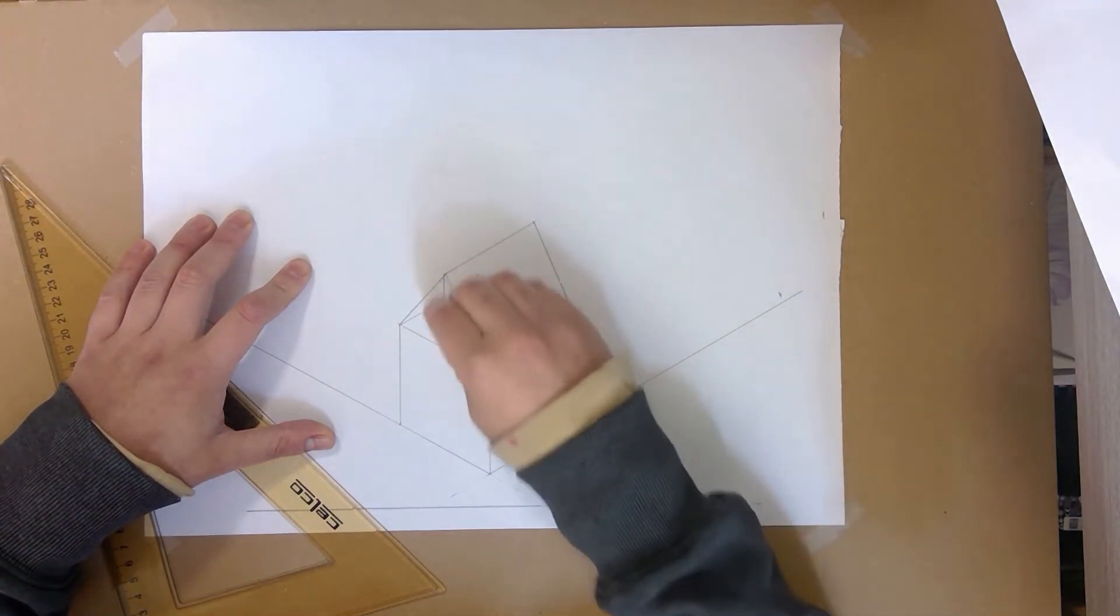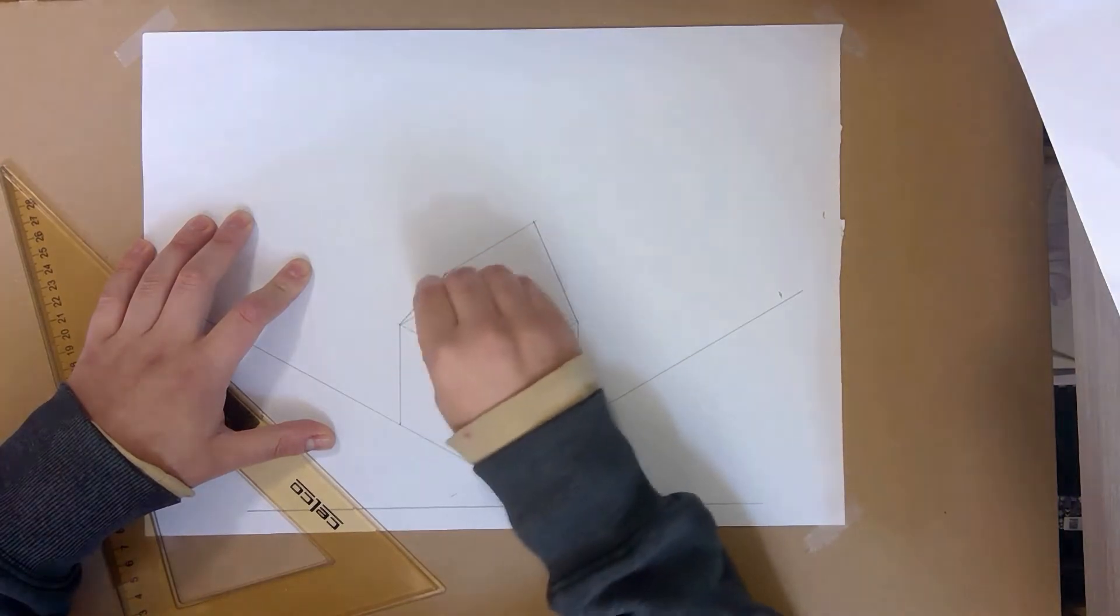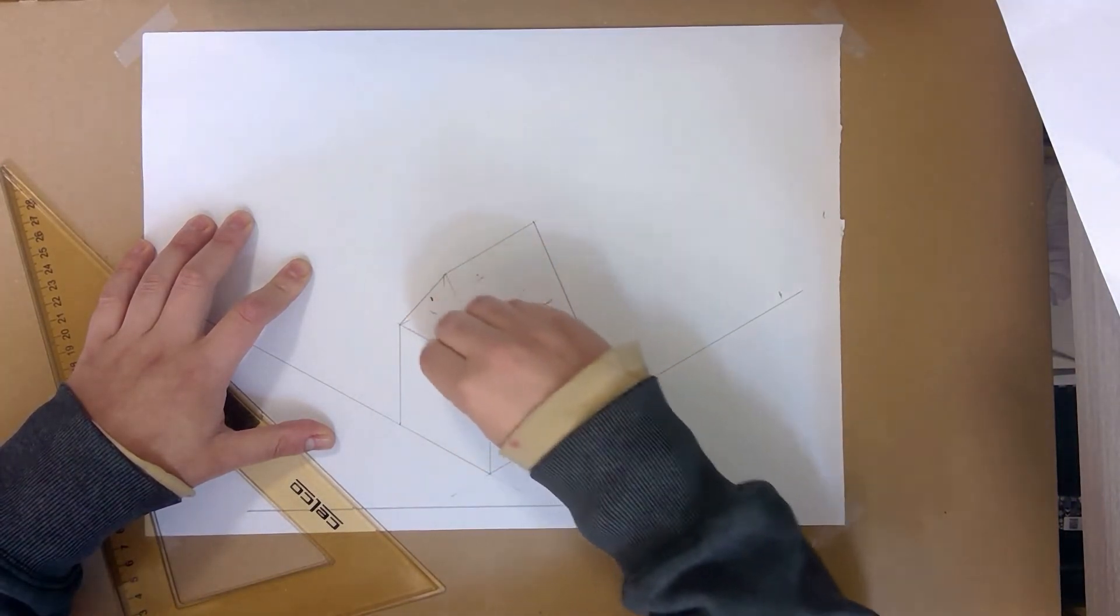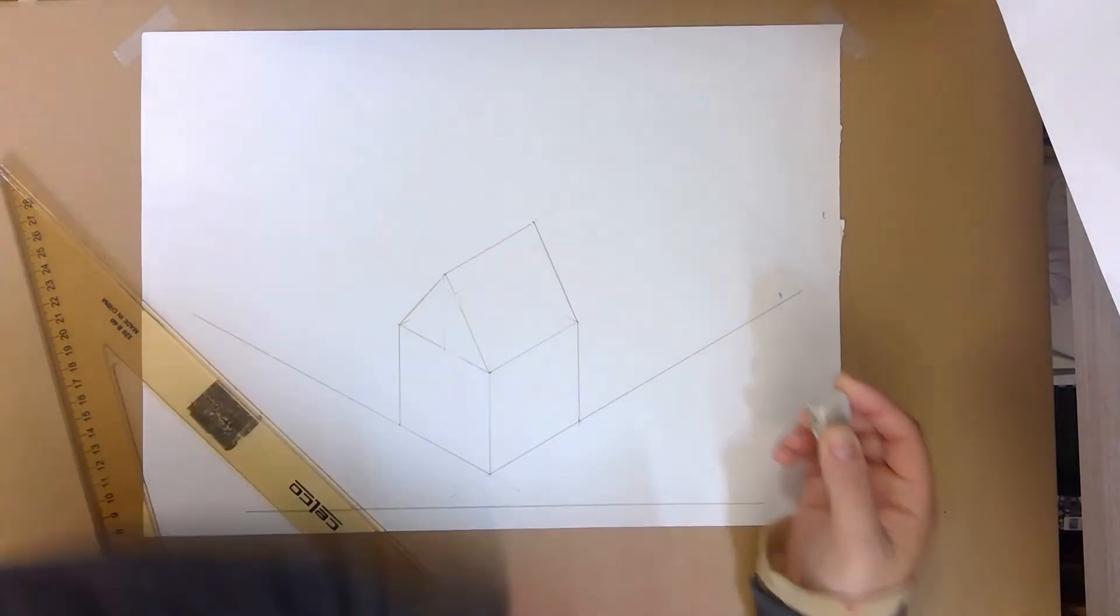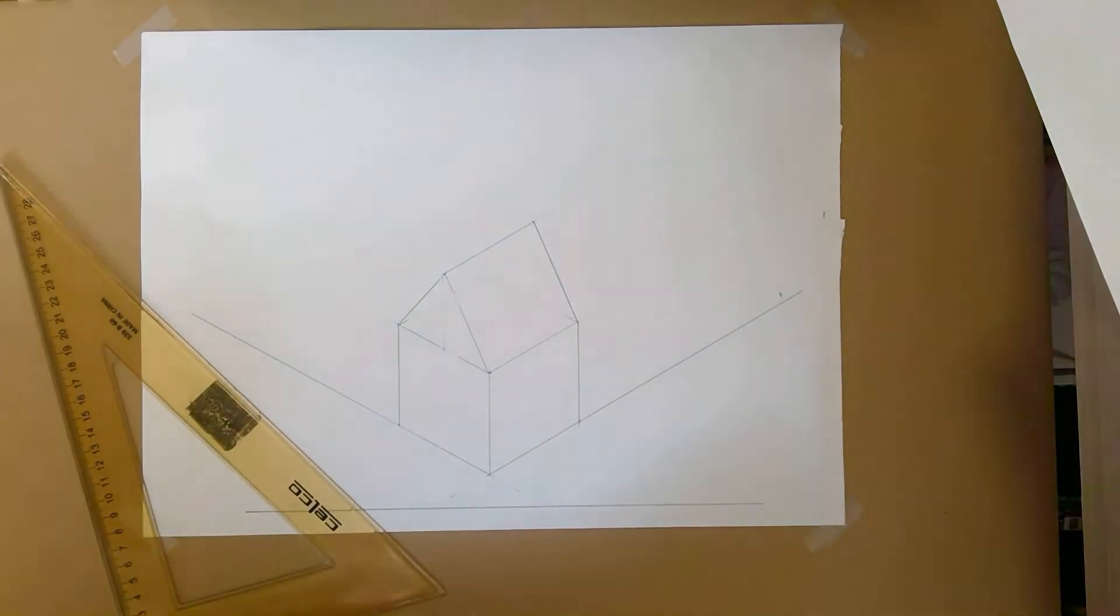So if we clean up our workspace a little bit, we'll see that we're left with a nice triangular prism sitting on top of our cube, constructing this little house.